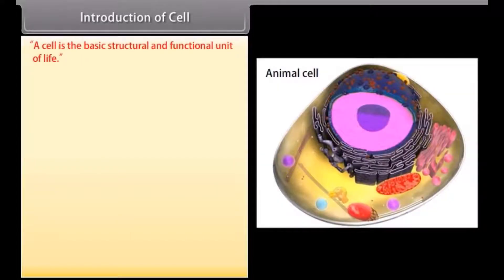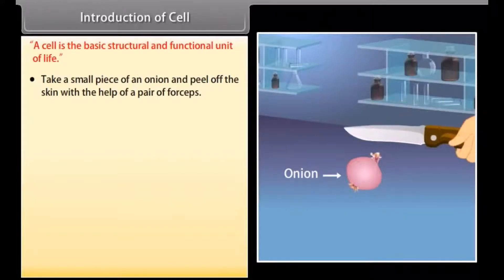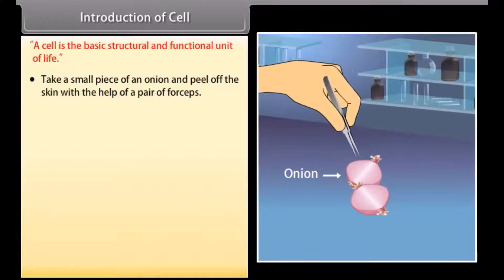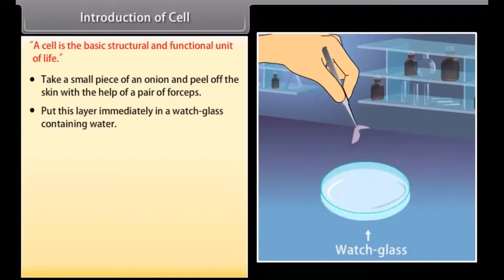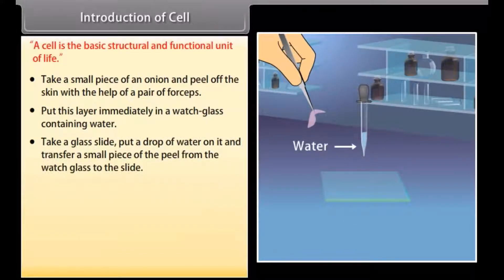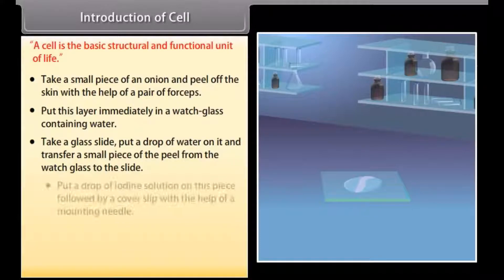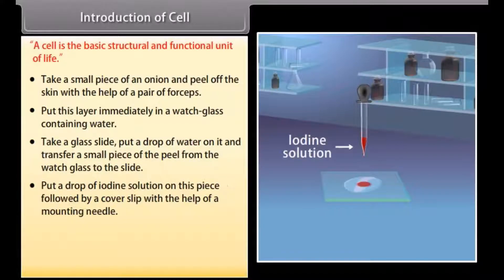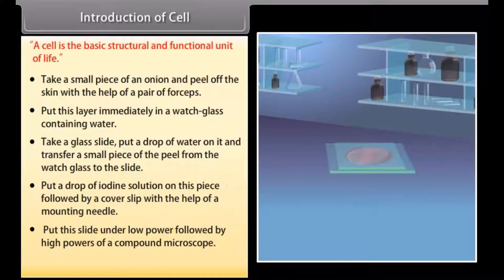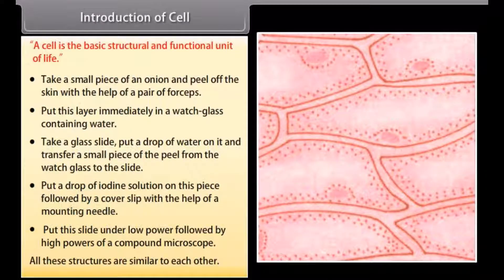A cell is the basic structural and functional unit of life. Experiment: take a small piece of an onion and peel off the skin with the help of forceps. Put this layer in a watch glass containing water. Take a glass slide, put a drop of water on it, and transfer a small piece of the peel to the slide. Put a drop of iodine solution followed by a cover slip. Place this slide under low power, then high power, of a compound microscope. All these structures are similar to each other.